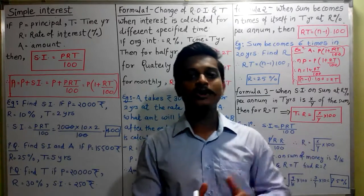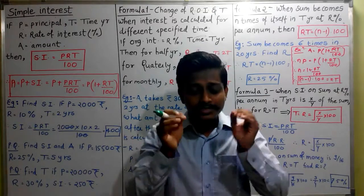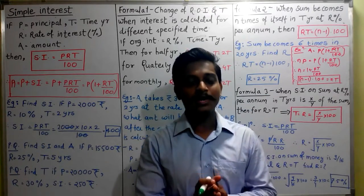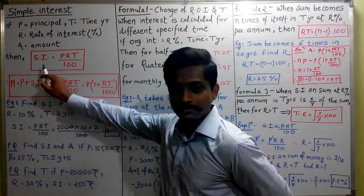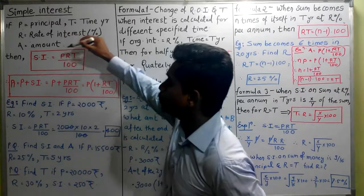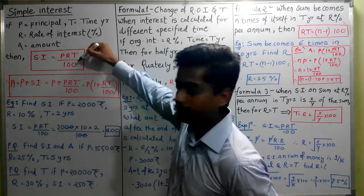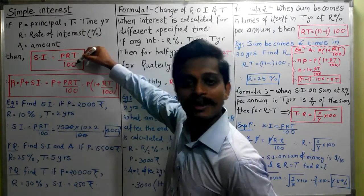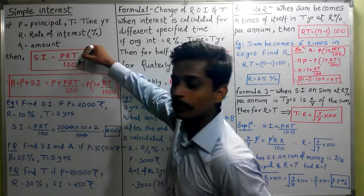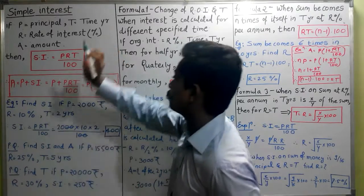So the basic formula for simple interest is: Simple Interest is equal to PRT upon 100. This is the first formula.